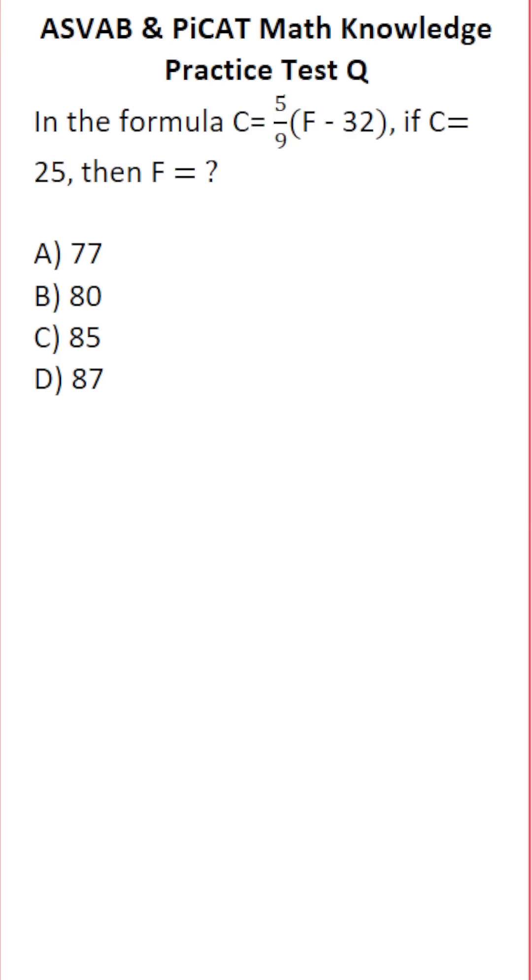This math knowledge practice test question for the ASVAB and PiCAT says in the formula C equals 5/9 times F minus 32, if C equals 25, then F equals. In other words, we're going to be converting from Celsius to Fahrenheit. So we're going to start by plugging in 25 for C.